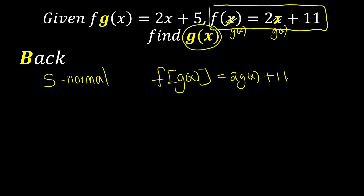Why do we do this? Although they give us fg(x), we want to build our own version of fg(x) by ourselves. So what we got — 2g(x) plus 11 — is our own version of fg(x), and the given fg(x) = 2x plus 5 is what they provided.